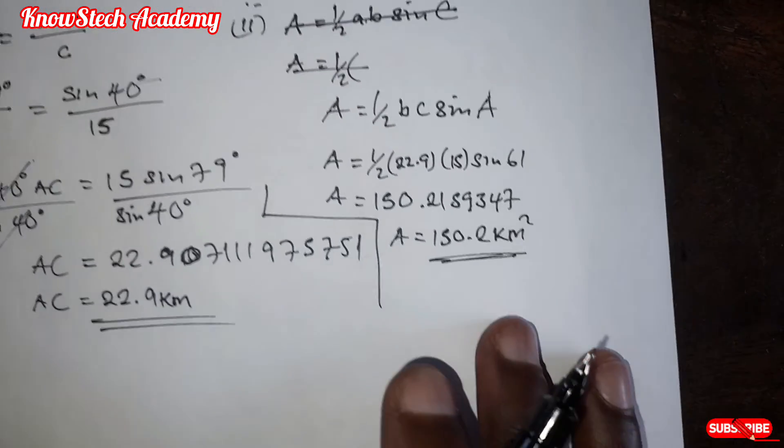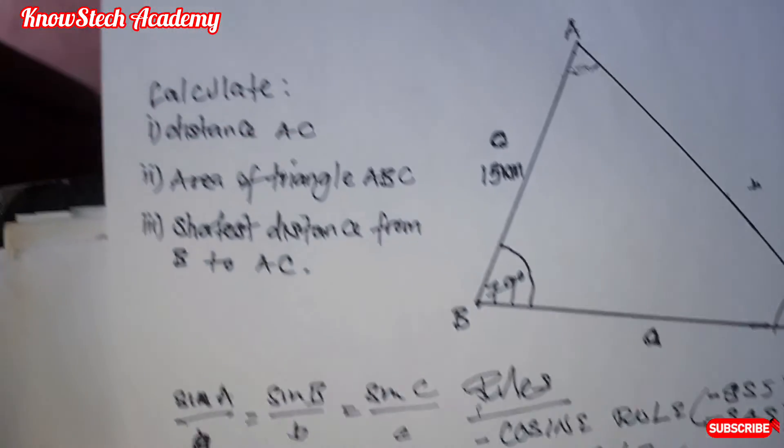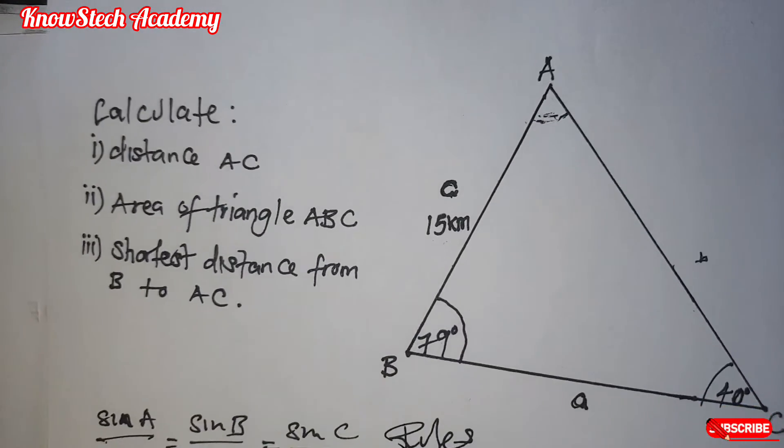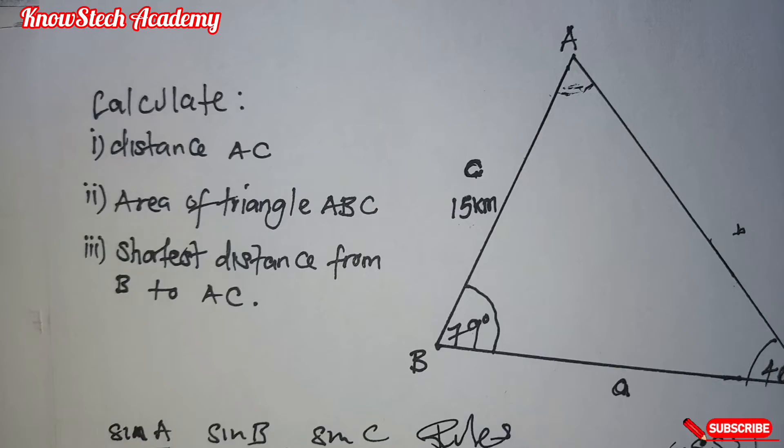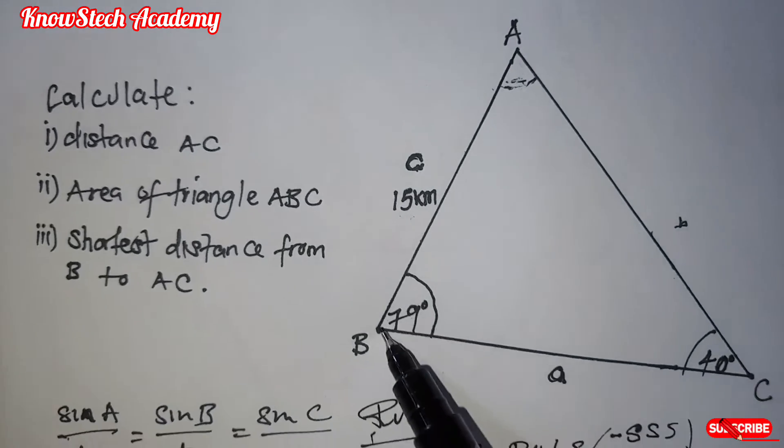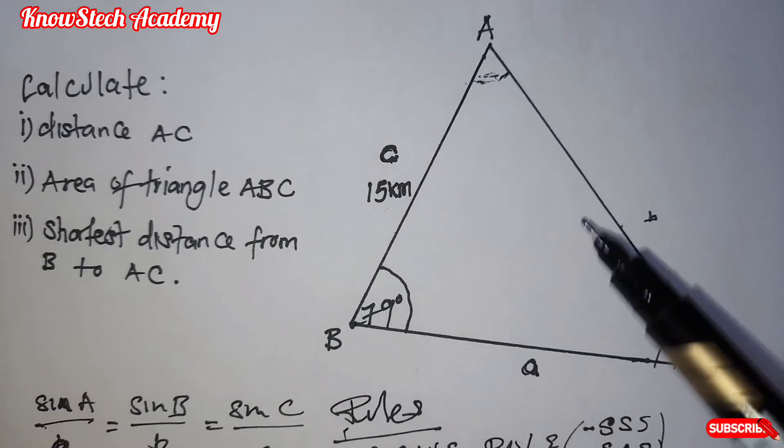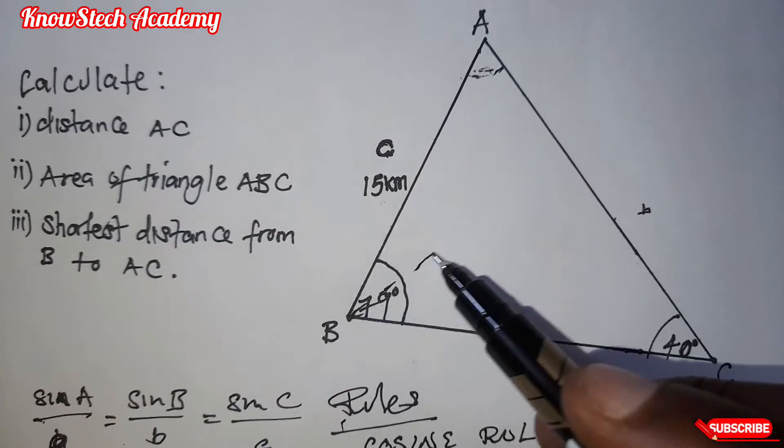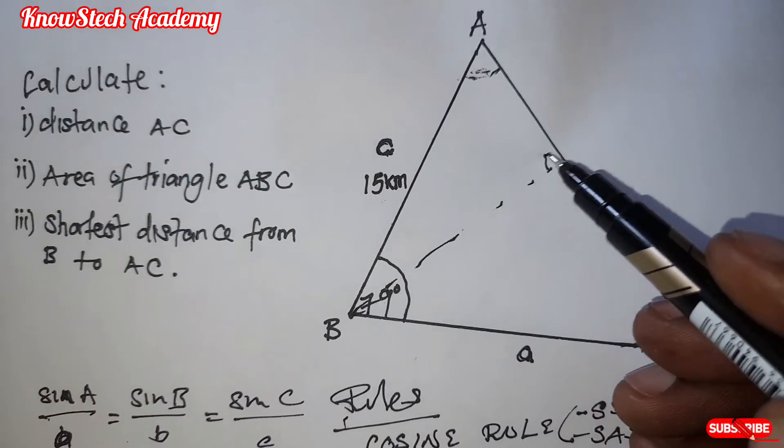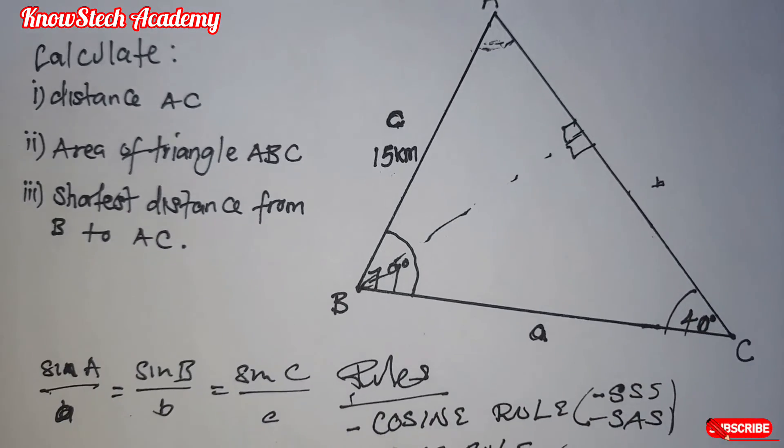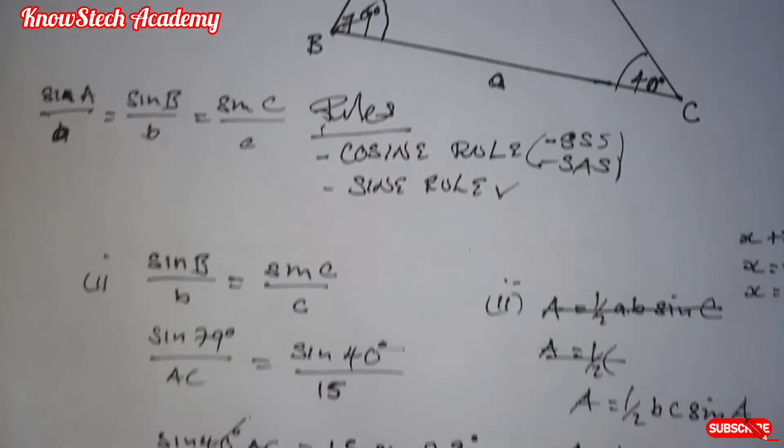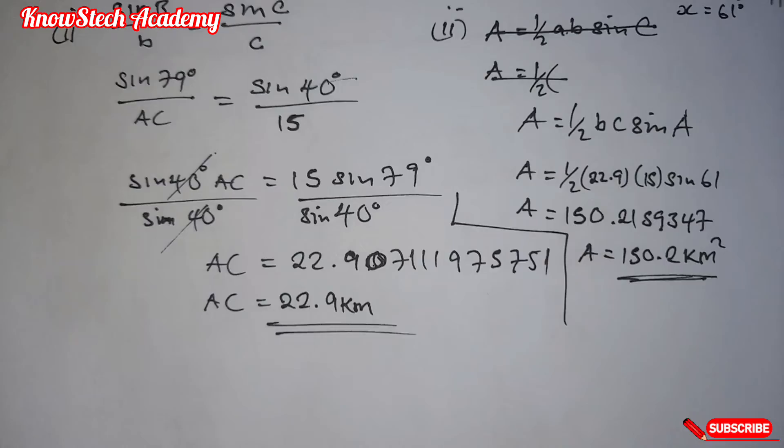Finally, the last question. We are asked to find the shortest distance from B to AC. So from this point to this point. So if I were to draw a line here, you'll find that it will form a right-angled triangle. So to find the shortest distance, we are going to say...